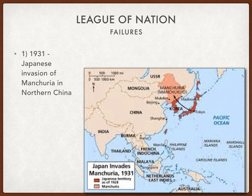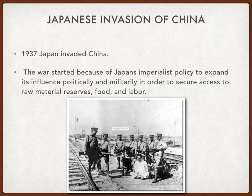As we saw in our video highlighting the weaknesses of the League of Nations, Japan invaded Manchuria in northern China in 1931. This showed the inability of the League of Nations to stop aggressive policies from nations, and this was a very aggressive policy by Japan. Japan had very little farmable arable land in its own country, so it invaded Manchuria and renamed it Manchukuo in 1931. The war started because Japan had this imperialist policy.